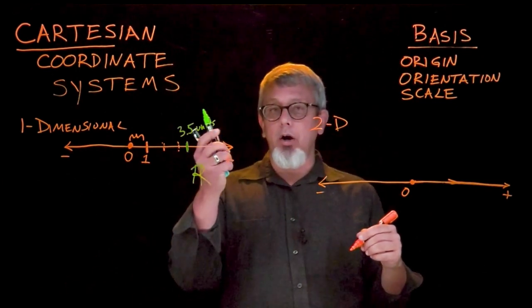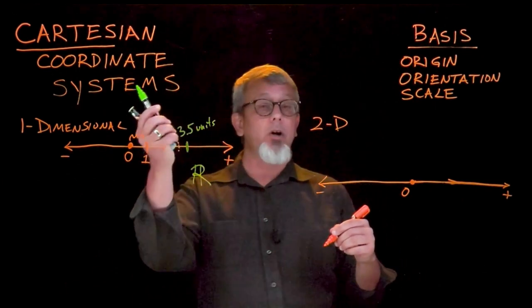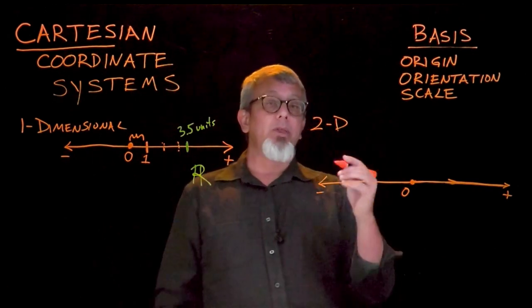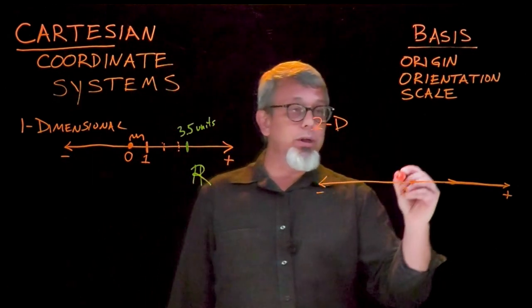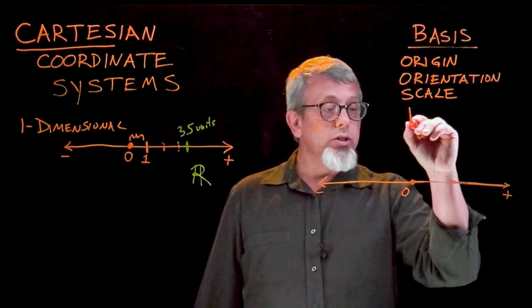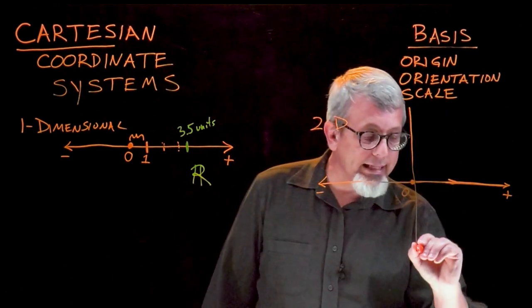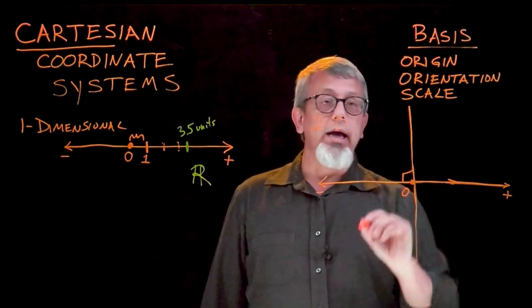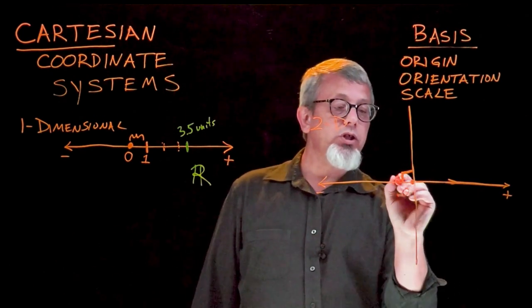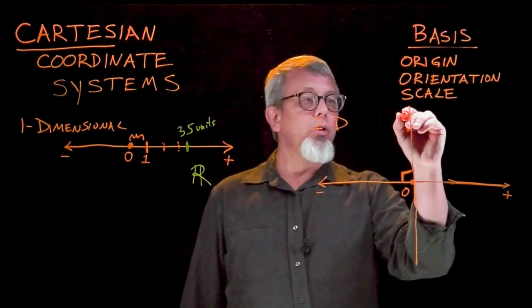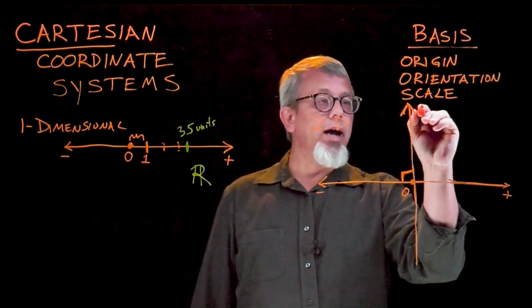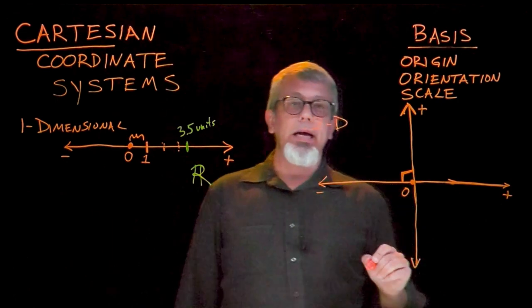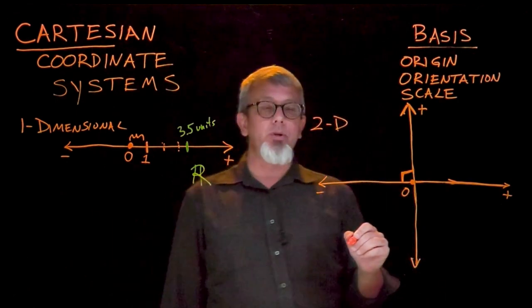This is where Rene Descartes and the Cartesian system have particular specifications. What they want us to do to define a system is to make sure we make our second set of directions perpendicular — at a right angle — to the first set. So now I'm going to define up as positive, which is very typical, and down as negative in my two-dimensional system.